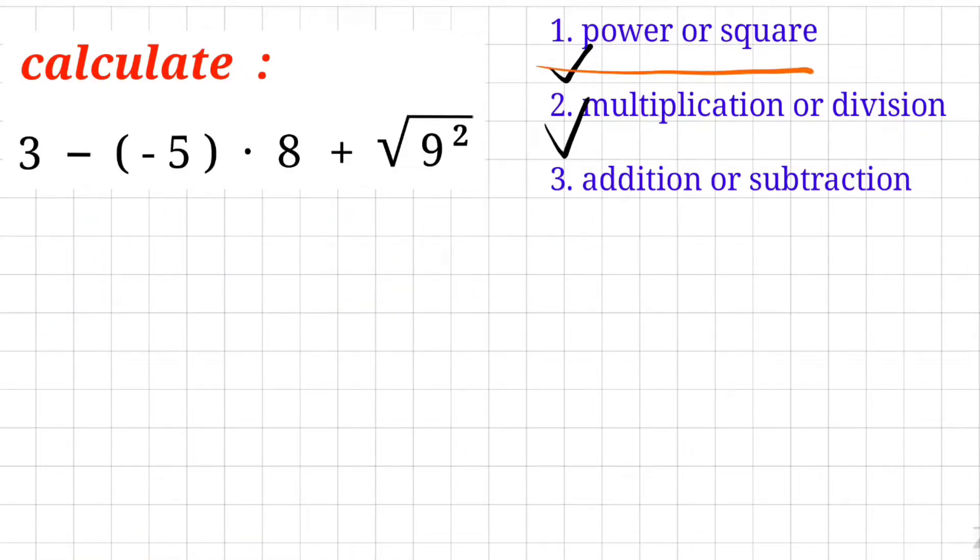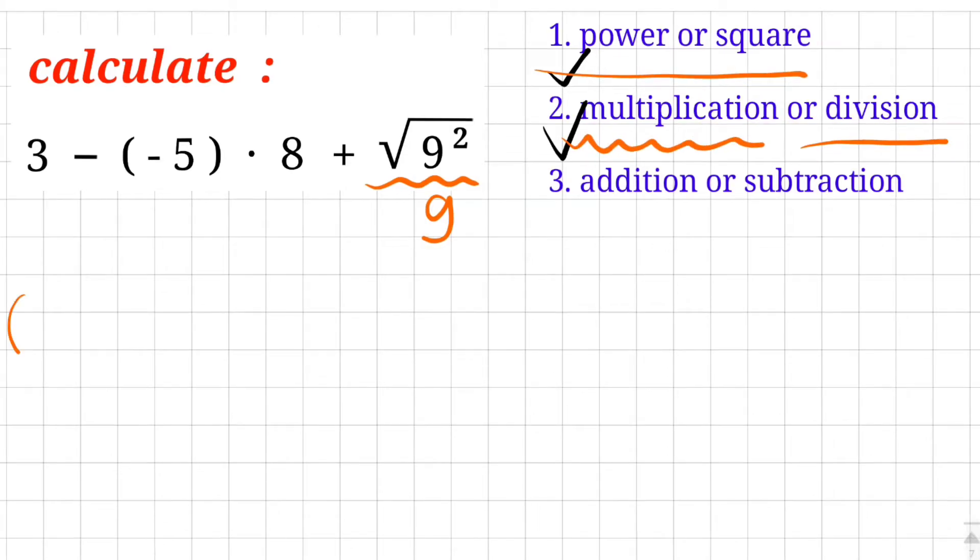And the second step is multiplications or divisions. We know it's 9. And the second step is to find the multiplications or the divisions. But there's no divisions in our problem. And there's multiplications. Minus 5 then times 8. Try to understand. Minus 5 times 8 is minus 40.